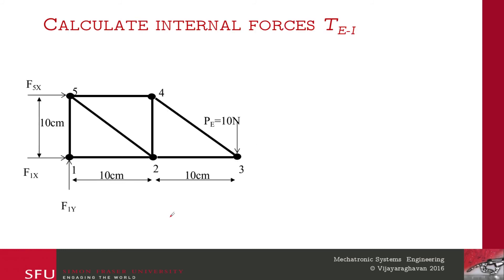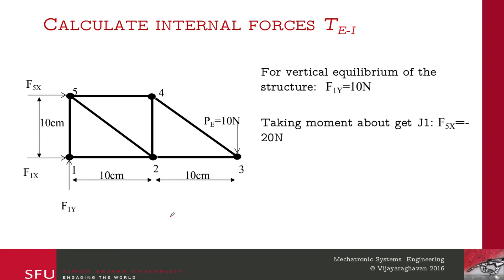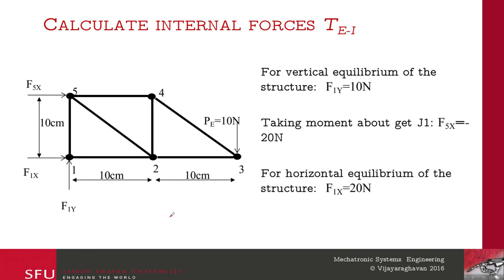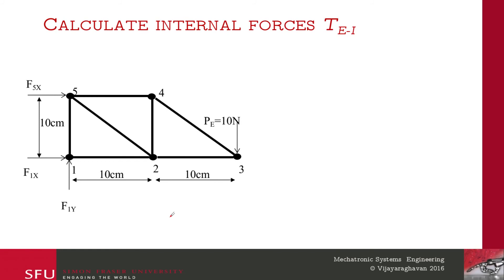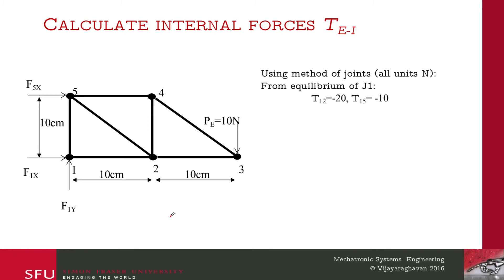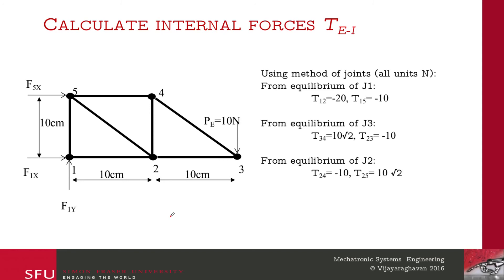For vertical equilibrium, we find F_1y equals 10 Newtons. Taking moment about j1, F_5x equals minus 20 Newtons. From horizontal equilibrium, F_1x equals 20 Newtons. Using the method of joints for equilibrium at j1, we find T_12 equals minus 20 and T_15 equals minus 10. Equilibrium of j3 gives T_34 equals 10*root(2) and T_23 equals minus 10. Equilibrium of j2 gives T_24 equals minus 10 and T_25 equals 10*root(2) Newtons.